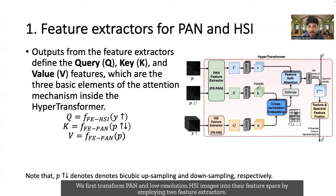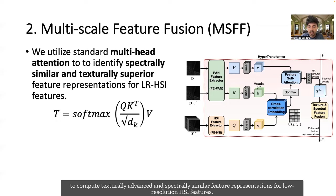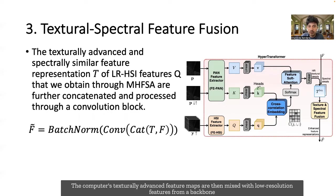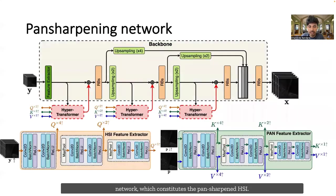We first transform pan and low-resolution HSI images into their feature space by employing two feature extractors. We then utilize low-resolution HSI, pan-down-up, and pan features as queries, keys, and values in an attention mechanism to compute texturally advanced and spectrally similar feature representations for low-resolution HSI features. The computed texturally advanced feature maps are then mixed with low-resolution features from a backbone network which constitutes the pan-sharpened HSI.